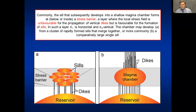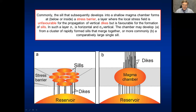Sills commonly form either just inside or within a unit or layer that we call a stress barrier. A stress barrier is simply a unit or layer in the crust where the stress field is unfavorable for the formation or propagation of dikes, and favorable for the formation or propagation of sills. The magma chamber may then possibly develop from many small sills, but more commonly from a single, comparatively large sill that becomes a shallow magma chamber.